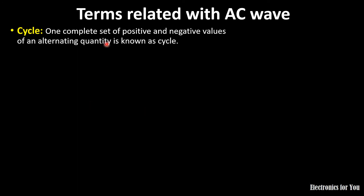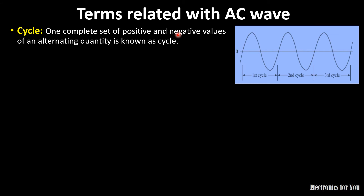Now we will move to the main topics: terms related with AC wave. The first one is cycle. One complete set of positive and negative values of an alternating quantity is called a cycle. Here you can observe that this is the positive set of values and this is the negative set of values. Combining this positive and negative set gives us a cycle — this is the first cycle. Again, a positive set and a negative set make another cycle — this is the second cycle — and from this point to this point is the third cycle.